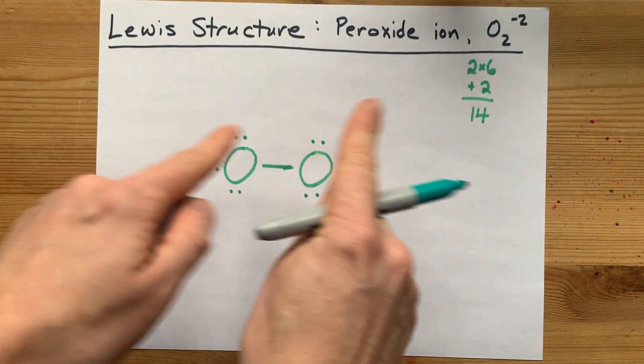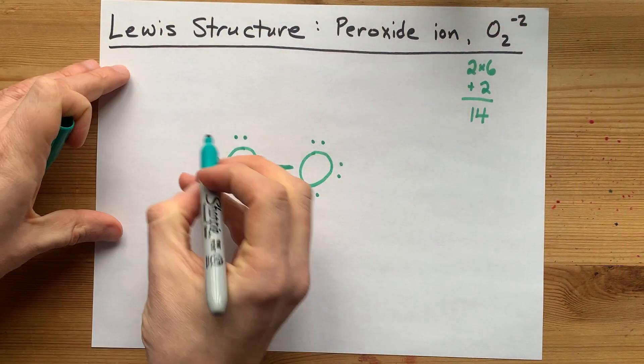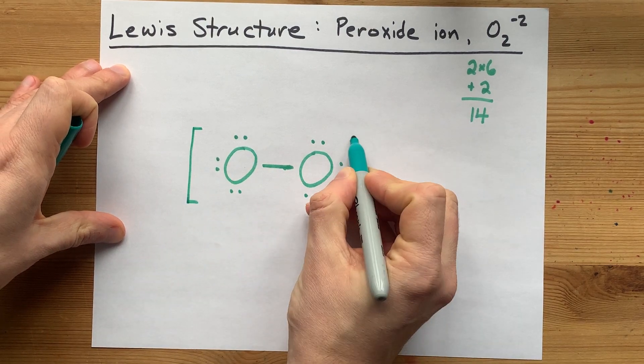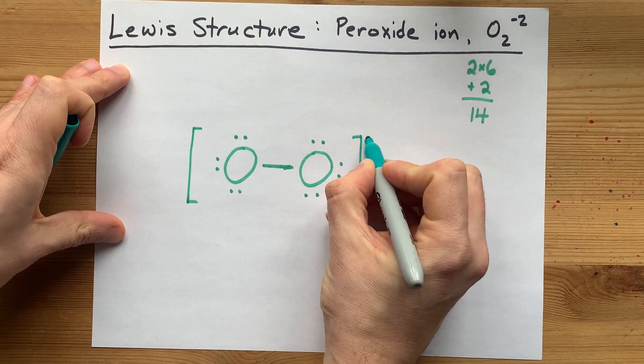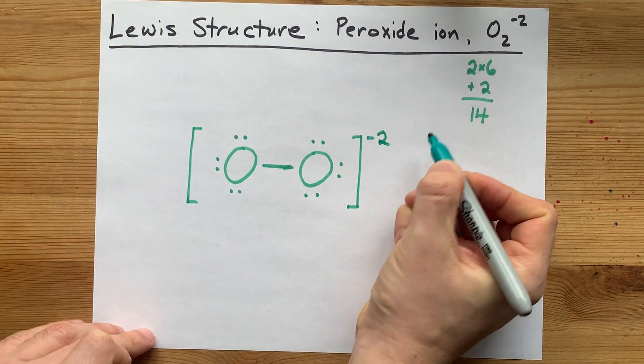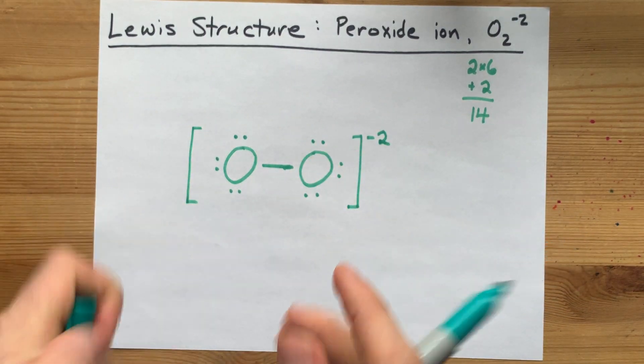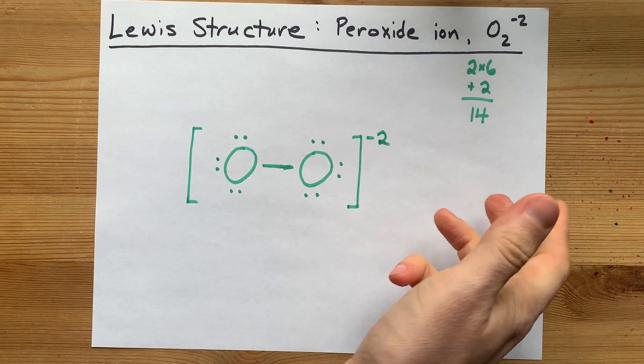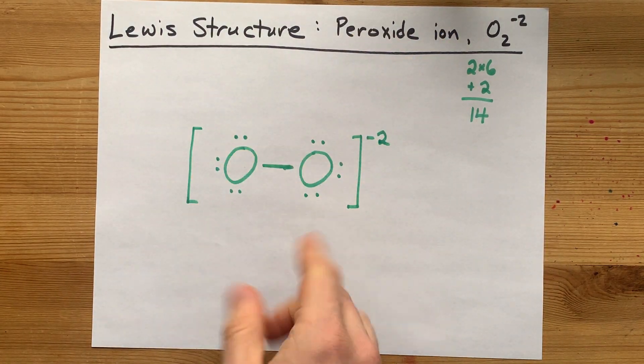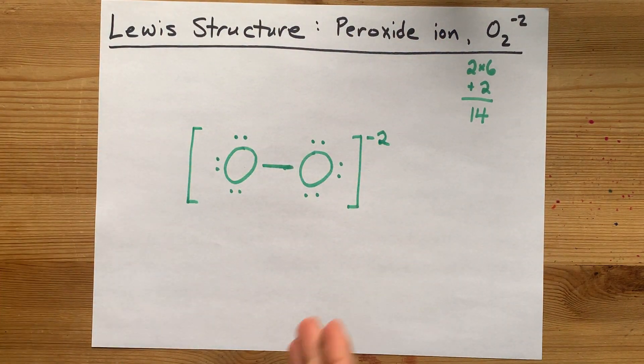Lewis structures for ions need square brackets around them, and you write the charge in the top right corner. That's the completed Lewis structure, and it just kind of fell together for us. It's a beautiful thing. The peroxide ion Lewis structure is easy. Best of luck.